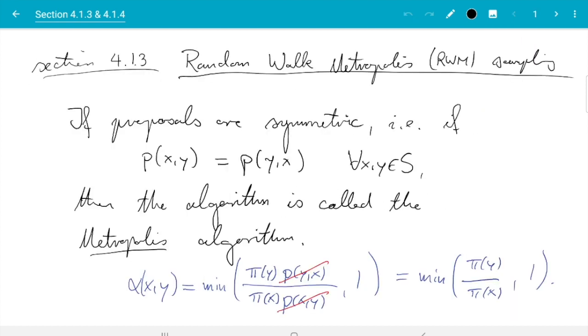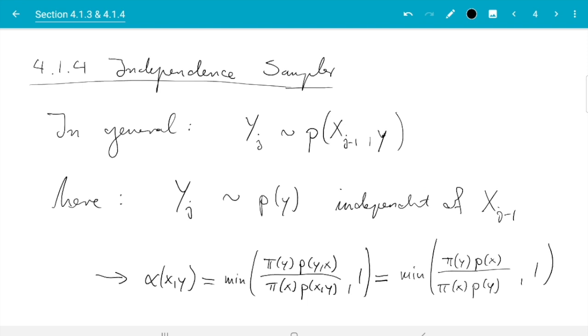Similarly, for random walk Metropolis, again the π's are divided by each other. So that concludes our discussion of variants of the Metropolis-Hastings algorithm.